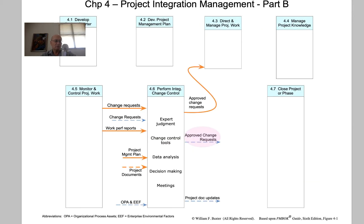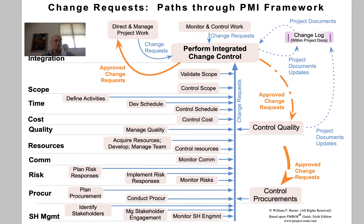Approved change requests also go to one other process — they come into Control Procurements if they relate to procurements.